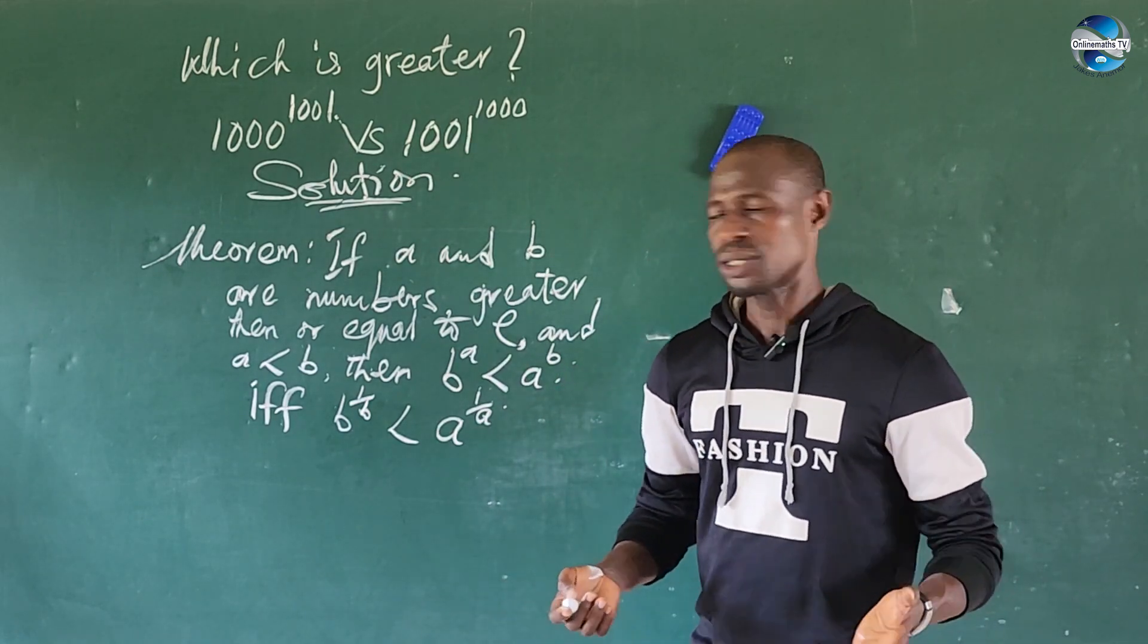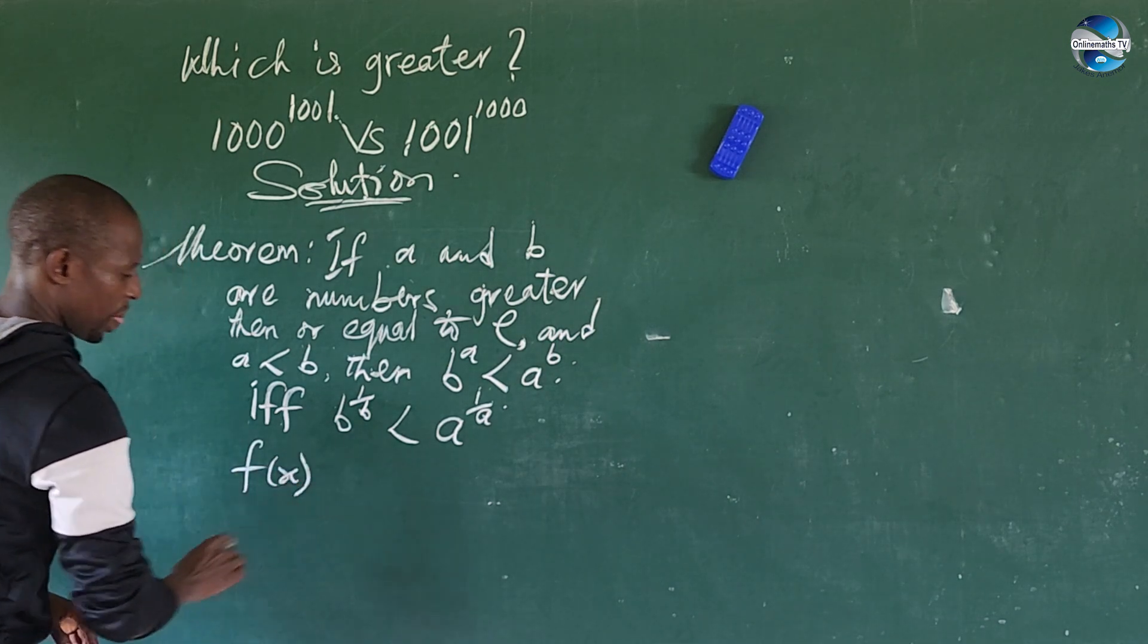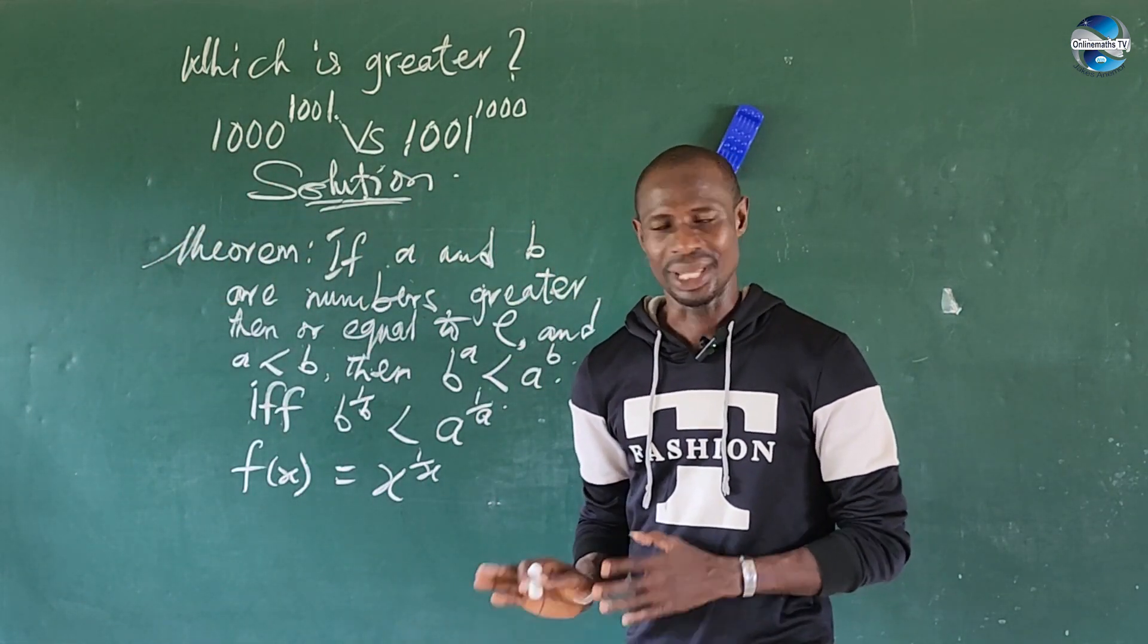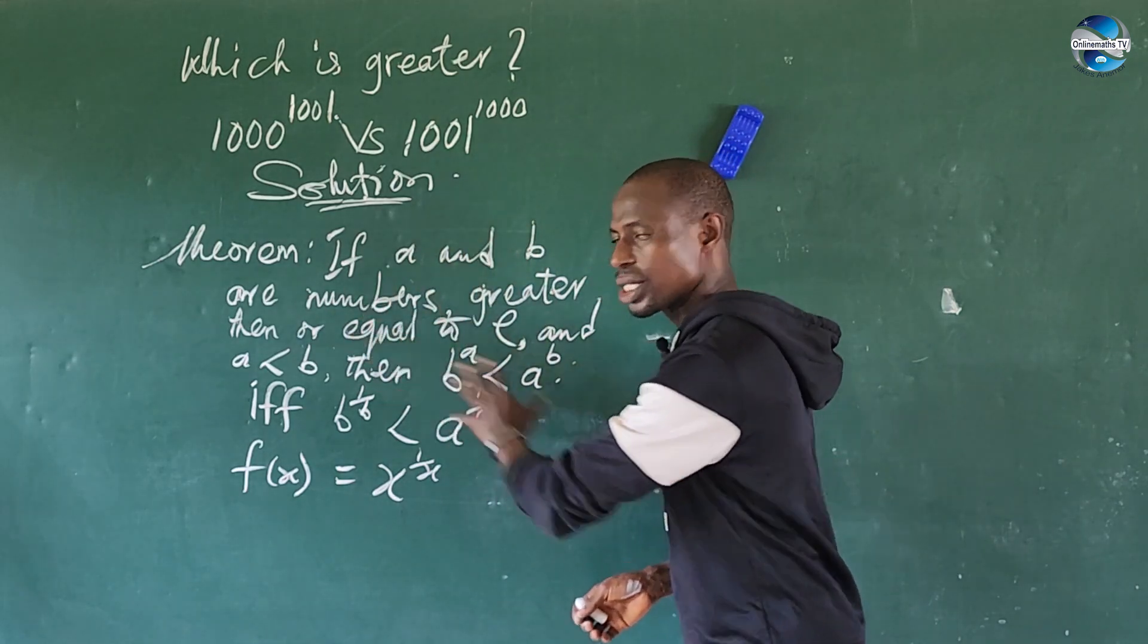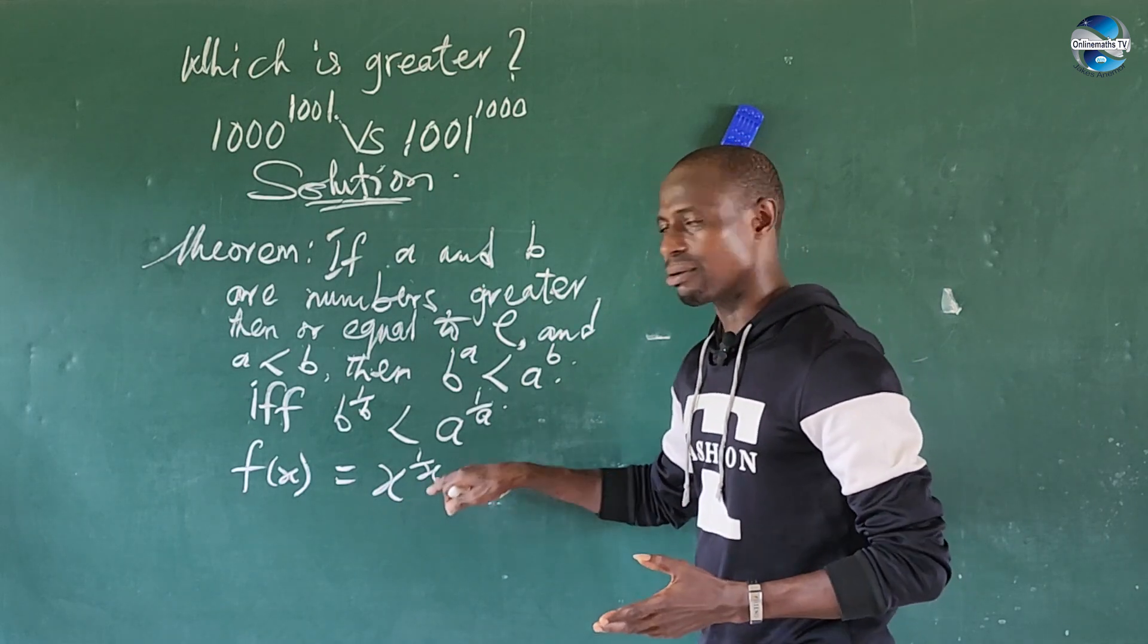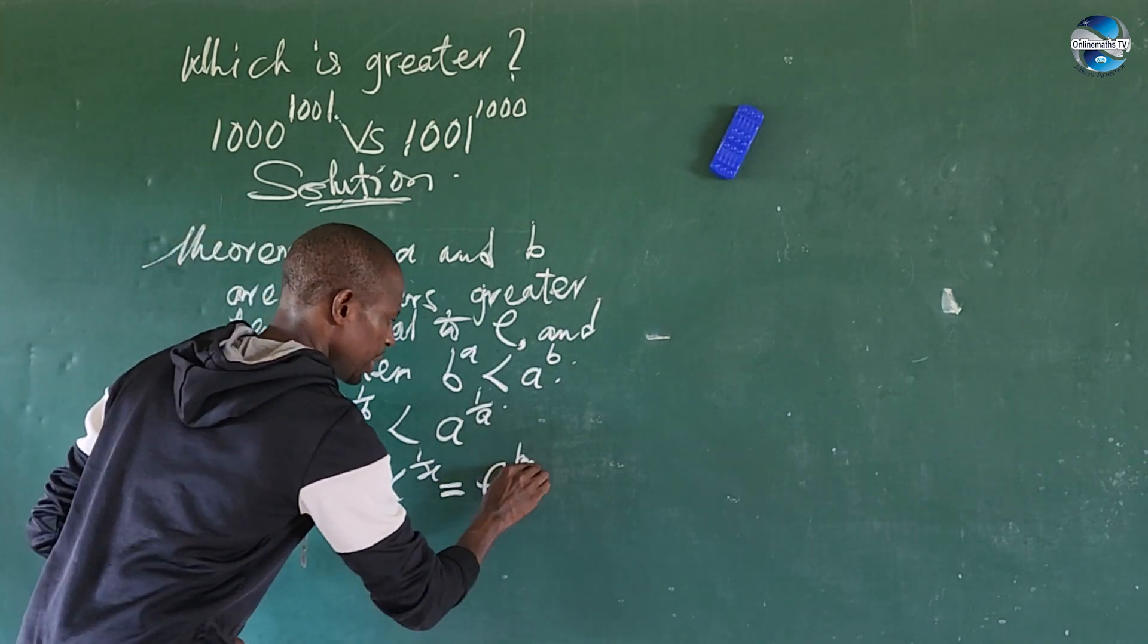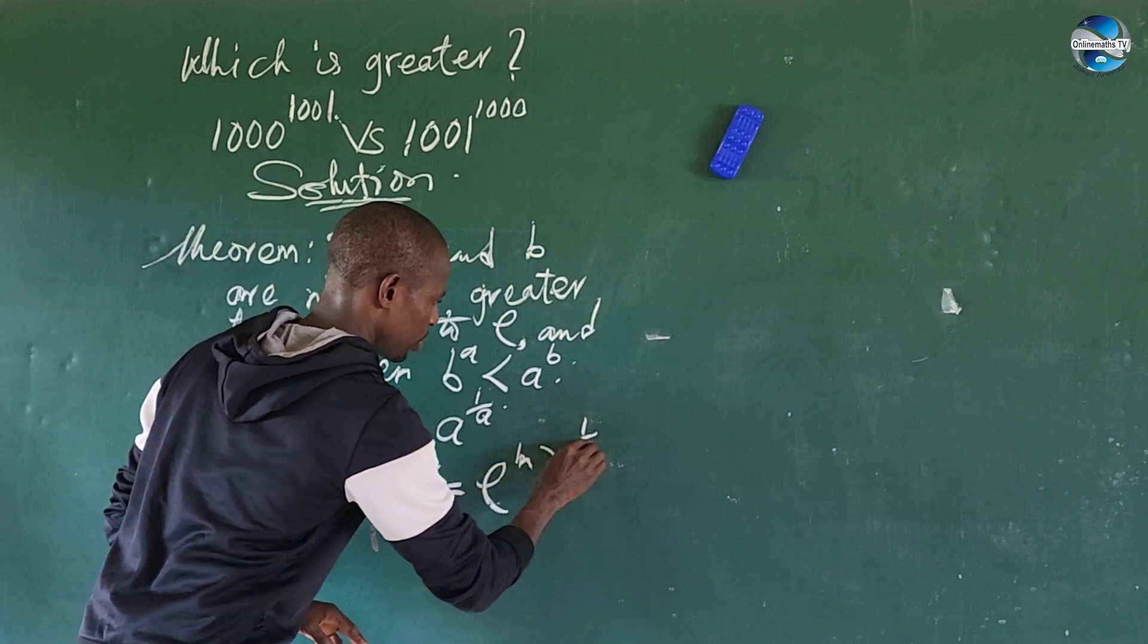So we have to prove a function. So suppose we have a function. Now we have f of x is equal to x to the power of 1 over x. So we must be able to prove that this function is an increasing function. That is the only way we can assume or succumb to this establishment. Now, if we have f of x is equal to this, I want to rewrite the right-hand side of the equation. So what do I do here? So I can introduce my E to this system here. So I'm having here E to the power of ln of this function here, which is x to the power of 1 over x.